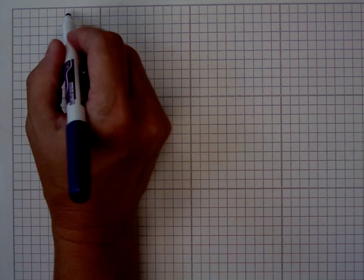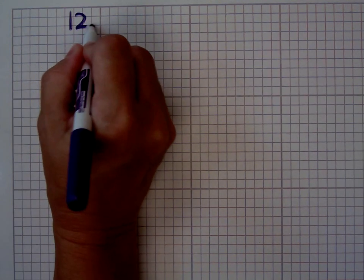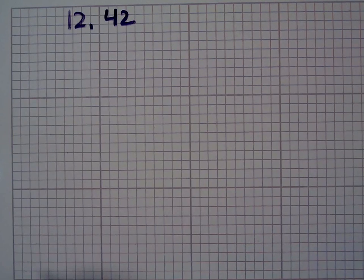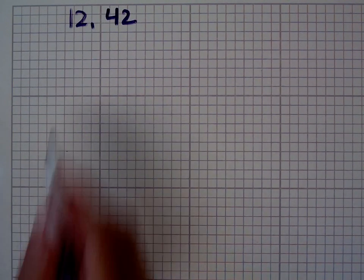What do we mean when we say greatest common factor? We're actually looking for all of the factors that two or three or four numbers have in common, and then picking the greatest one. It can take a long time to do, but I found a pretty easy way to do it — it's pretty quick. Let's say we're looking for the greatest common factor of 12 and 42.